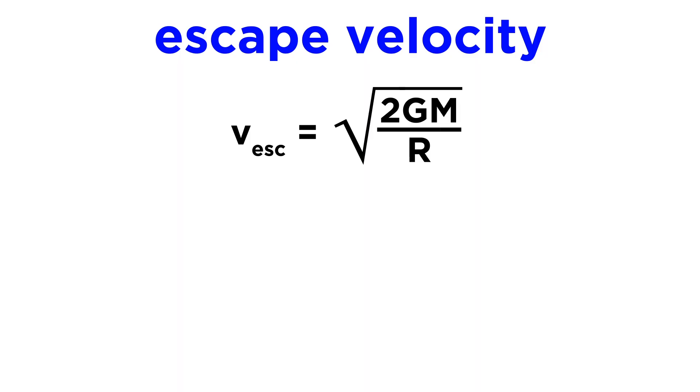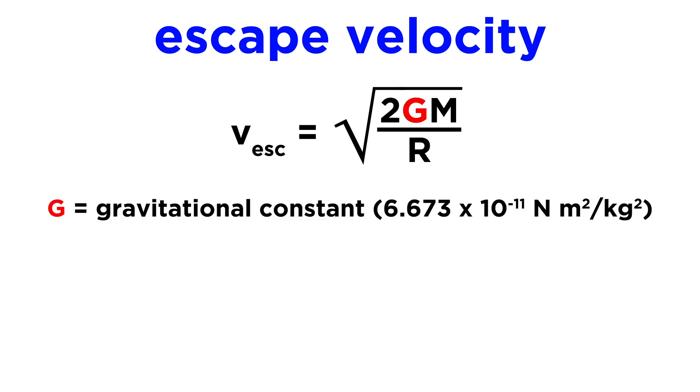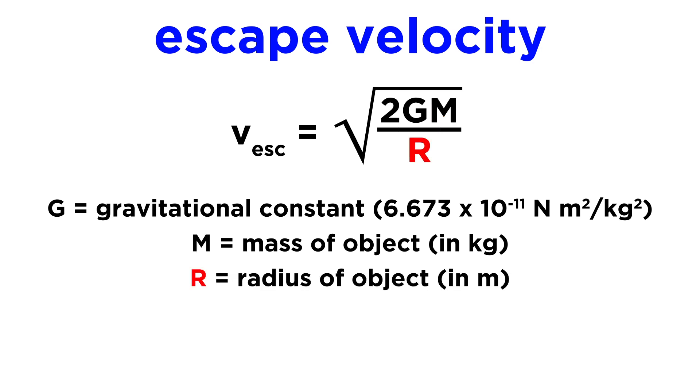We can calculate the escape velocity for a massive object by using this equation, where g is the gravitational constant, m is the mass of the object, and r is the radius of the object.